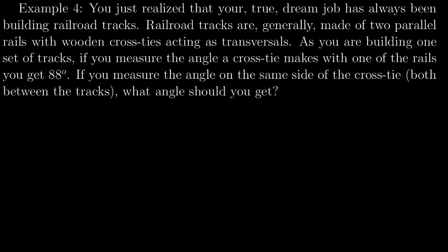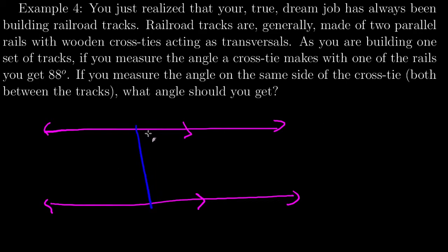Okay. Last example. You just realized that your true dream job has always been building railroad tracks. Railroad tracks are generally made up of two parallel rails, so we have our rails marked parallel with wooden cross ties acting as transversals. So, we generally would have, then, a cross tie. And we have a lot of them. And ideally, they would be perpendicular. But there's nothing that says they have to be perpendicular.